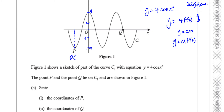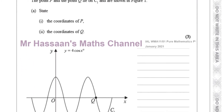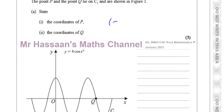The coordinate of P is going to be something comma minus 4. What is the x value? It doesn't change from normal. Cosine x becomes minus 1 when x is minus 180 degrees, so the coordinates of P are going to be minus 180 degrees and minus 4.